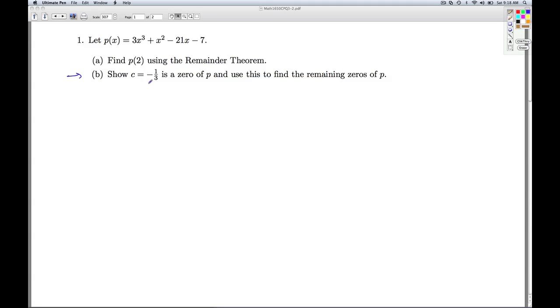In part b, we're asked to show that c equals negative 1 third is a zero of p and use this to find the remaining zeros of p. So remember, what does it mean to be a zero? It means that when I plug that number into the polynomial, I get a zero out. Now, of course, there's two ways to do this. I can plug this in and simplify and show you that I get out zero, or I can use synthetic division and get a remainder of zero. The advantage to synthetic division is, once I know one zero, synthetic division shows me how I can factor the polynomial. And that's exactly what we're going to do.